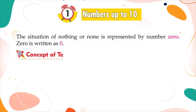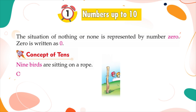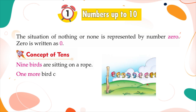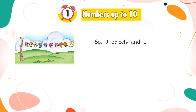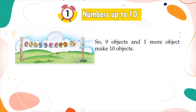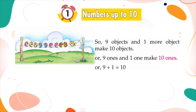Concept of tens. Nine birds are sitting in a row. One more bird comes to join them. Now they are in a group of ten. So, nine objects and one more object make ten objects. Or, nine ones and one make ten ones. Or, nine plus one is equal to ten.